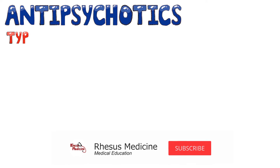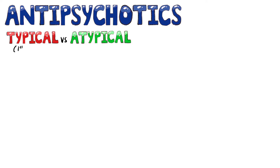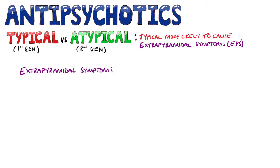Antipsychotic medications are split into two broad categories: the typical and atypical antipsychotics. The main difference is that typical antipsychotics are much more likely to cause extrapyramidal symptoms, but we are going to cover the other differences too, as well as their uses and their side effects.